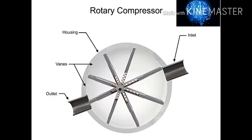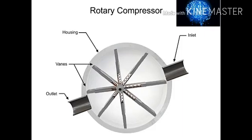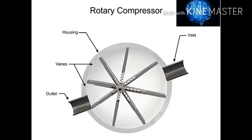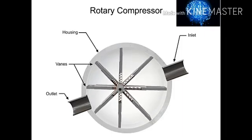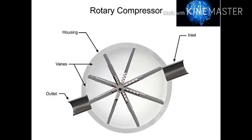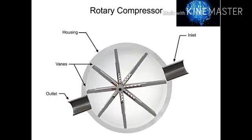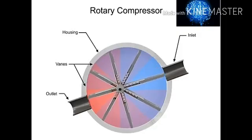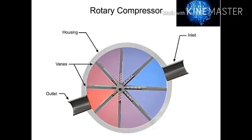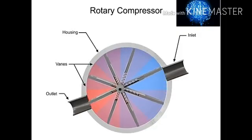As the shaft rotates, the vanes slide in and out to maintain contact with the cylindrical compressor wall. As they do, they create chambers within the cylinder of varying sizes.